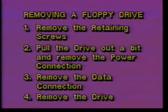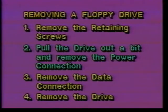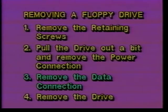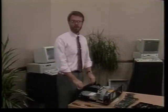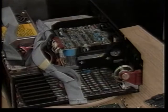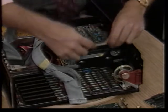Next, we'll remove the floppy drives. Drives are removed in four steps: first remove the retaining screws, then pull the drive out just a bit and remove the power connection, then remove the data connection, and then pull the drive right out. Floppy drives are held in place on a PC by a pair of screws on the side of the drive — remember I told you an offset screwdriver would be useful.